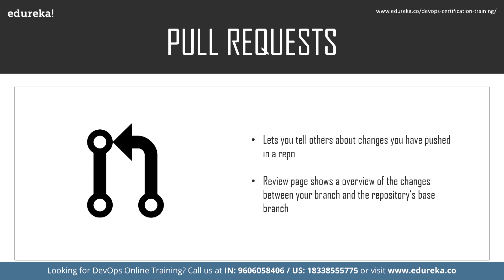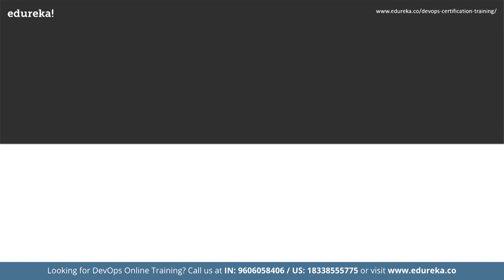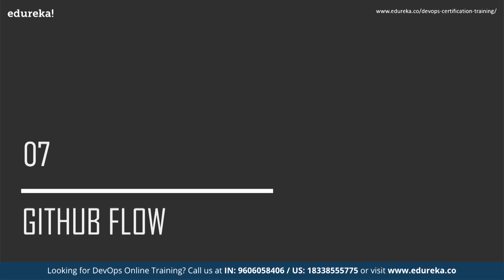You can add a summary of the proposed changes, review the changes made by commits, add labels, milestones, assignees, and also mention individual contributors or teams. You can create a pull request to propose and collaborate on changes to a repository — these changes are proposed in a branch, which ensures that the default branch only contains finished and approved work. In the next part of the session, we will be discussing about GitHub flow.